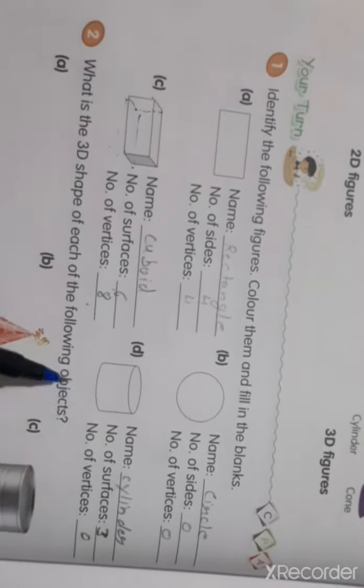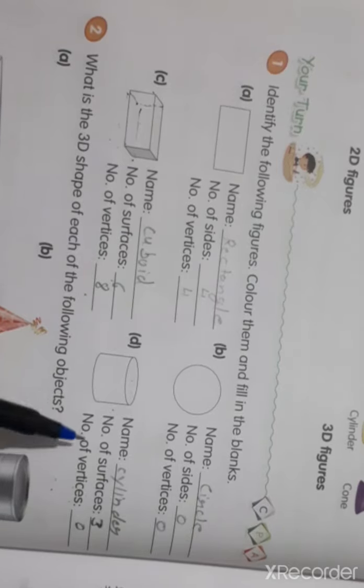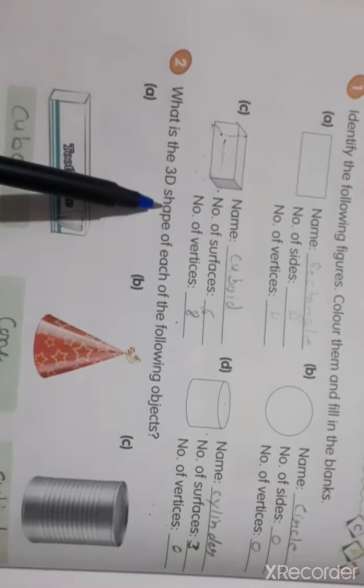D, what is this? It is cylinder. Yes, it is the cylinder. Now number of surface 3: 1, 2, and 3. Number of vertex 0. This is not a vertex. This is called surface: 1 surface, 2 surface and it is the 3 surface. No vertices here.